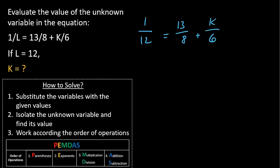The LCD for these three is 24. So let's multiply everything by 24 to get rid of the denominators. 13 times 24 divided by 8 plus 24k divided by 6. Now this is trimmed to 2.